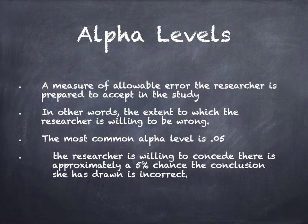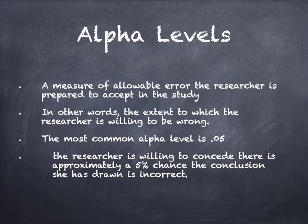A little bit about alpha levels. Alpha levels are a measure of allowable error the researcher is prepared to accept in the study. In other words, it's the extent to which the student is willing to be wrong. The most common alpha level is 0.05, which is essentially saying there's approximately a 5% chance that the conclusion the researcher comes to is wrong, or willing to concede there's approximately a 5% chance that they're incorrect.